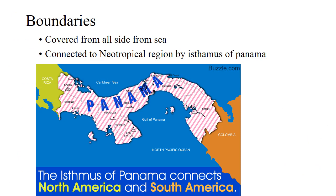The outside of the Nearctic region is covered with sea. The only land connection is the Isthmus of Panama, which connects the Nearctic region to the Neotropical region.